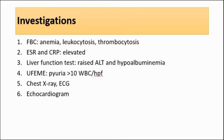Third is liver function test, where we will see raised alanine aminotransferase and hypoalbuminemia in Kawasaki disease. For urine full examination and microscopic examination, we can see pyuria — more than 10 white blood cells per high power field. Chest X-ray can also be done; in Kawasaki disease it usually shows a normal or reticulonodular pattern in 90% of cases, and can also show peribronchial cuffing, pleural effusion, or atelectasis.